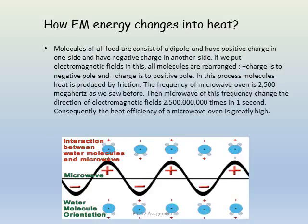Now we will see how electromagnetic energy changes into heat. Molecules of all food consist of dipoles, having a positive charge on one side and a negative charge on the other. When an electromagnetic field is applied, all molecules are rearranged — positive charges move toward the negative pole and negative charges toward the positive pole. In this process, heat is produced by molecular friction.